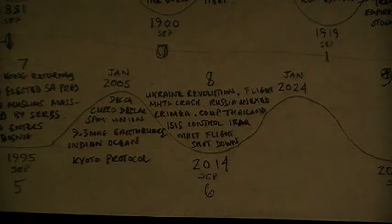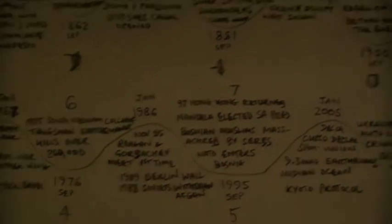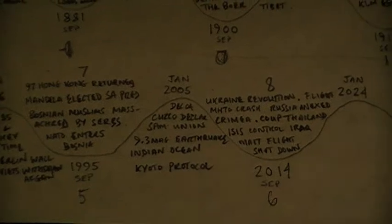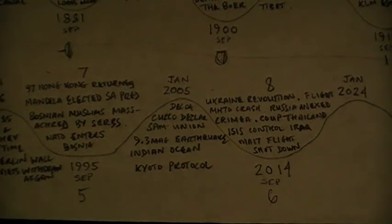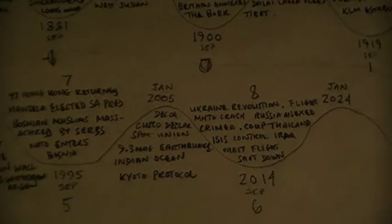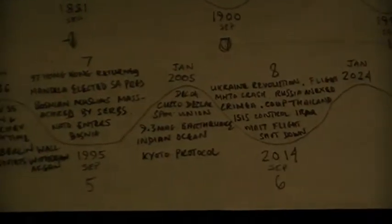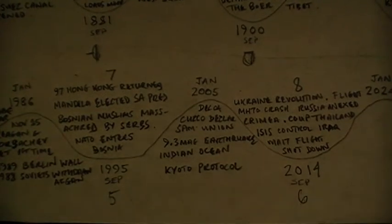Interestingly, considering dates like 2014, 1995, and 1996, they are actually multiples of 19. So 19 divides into 2014 exactly 106 times, 108 times 19 is 2052, and 105 times 19 is 1995. So we go right back to year zero, interestingly enough.